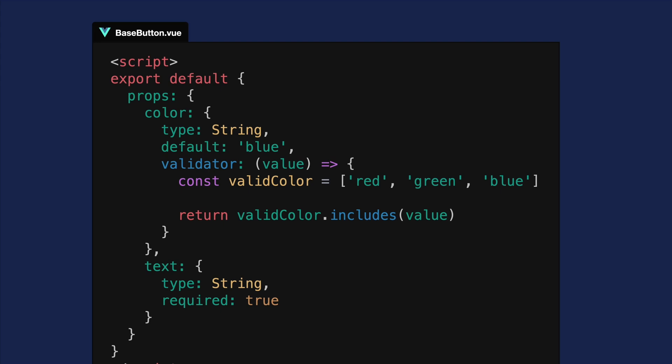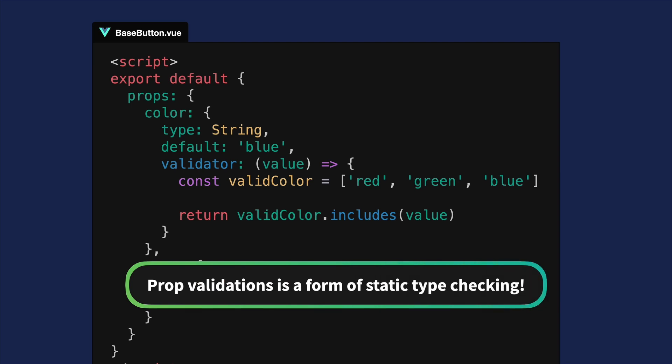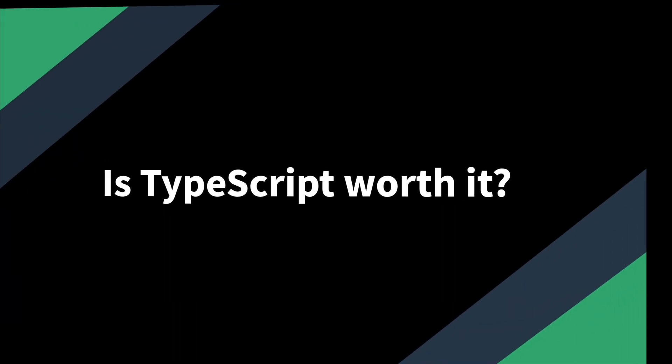After looking over this new and improved version of props on our button component, what you might not realize is that what we've actually done is assign a static type to our props. In other words, whether you realize it or not, you've been leveraging static types this entire time. Now that we've demystified the use of static types, the real question that still remains is: is TypeScript worth it?